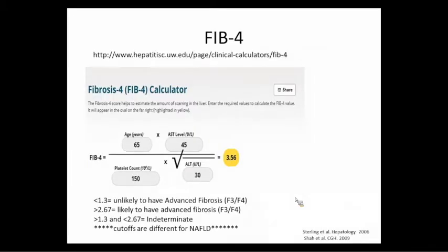FIB-4 is another calculator, initially developed by Richard Sterling from VCU for HIV-hepatitis C co-infection. Shaw et al. with Sanyal from VCU adapted this equation for fatty liver disease — the cutoffs are different. I caution you: if you use this online, don't use the co-infection cutoffs shown at the bottom of the screen, as co-infected patients typically have more fibrosis and are treated differently. For an obvious cirrhotic example: a 65-year-old — age is very dependent on fibrosis. AST of 45, ALT of 30. Whenever AST exceeds ALT, I get worried about cirrhosis, but low platelets are the major warning sign — an indirect marker of portal hypertension, hypersplenism, and decreased thrombopoietin production.